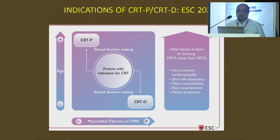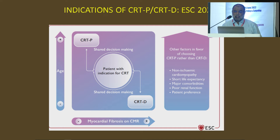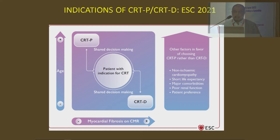For patients with indication of CRT-P or CRT-D, this should be a shared decision. In patients with CRT indication, for non-ischemic patients we can implant CRT-P, and for ischemic patients CRT-D. Points in favor of CRT-P include non-ischemic cardiomyopathy, short life expectancy, major comorbidities, poor renal function, and patient preference. Patients with ischemic cardiomyopathy should be implanted with CRT-D.